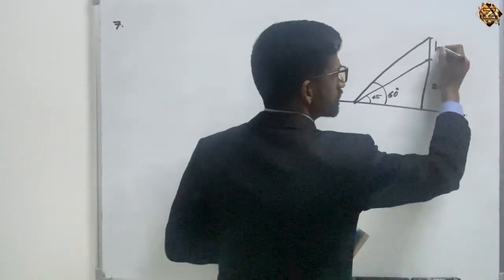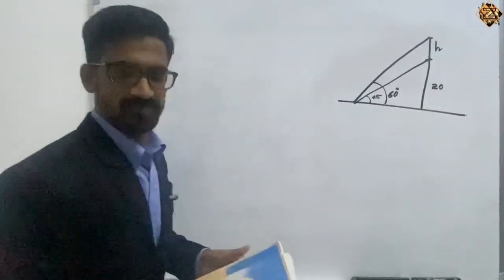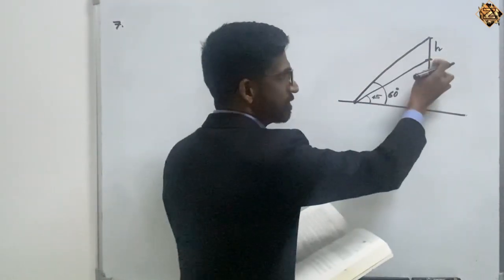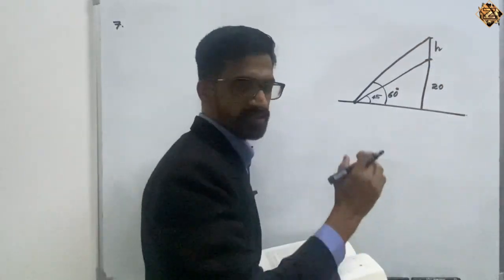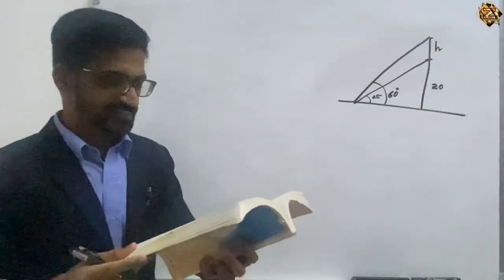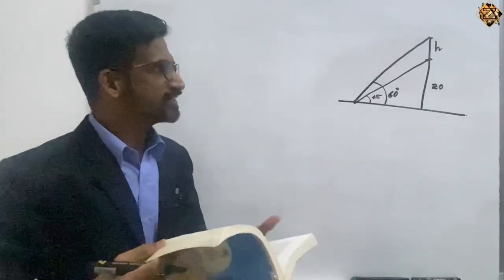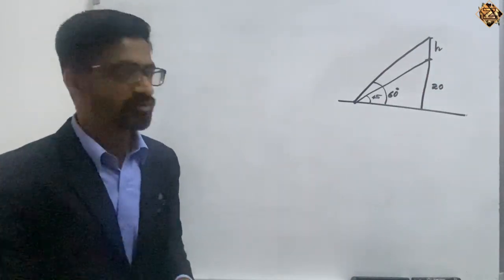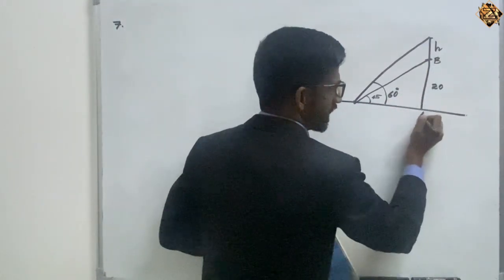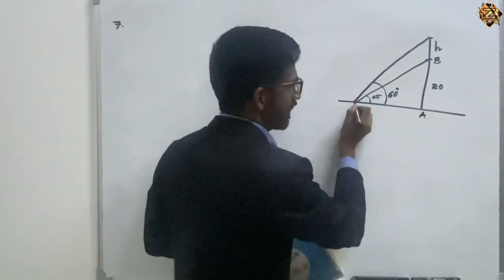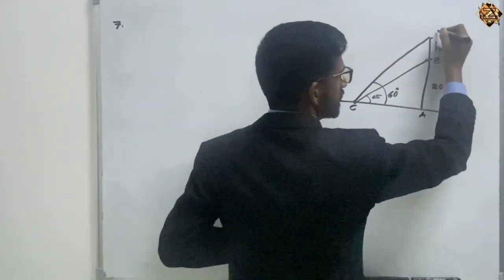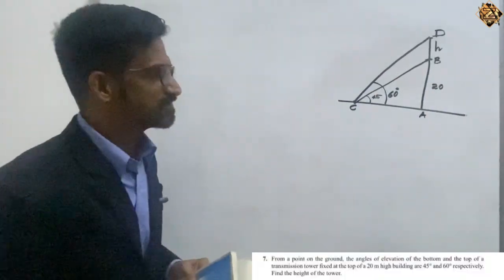Find the height of the transmission tower — that is the question. So first let's take: let AB be the building, C be the point of observation, and BD be the transmission tower.